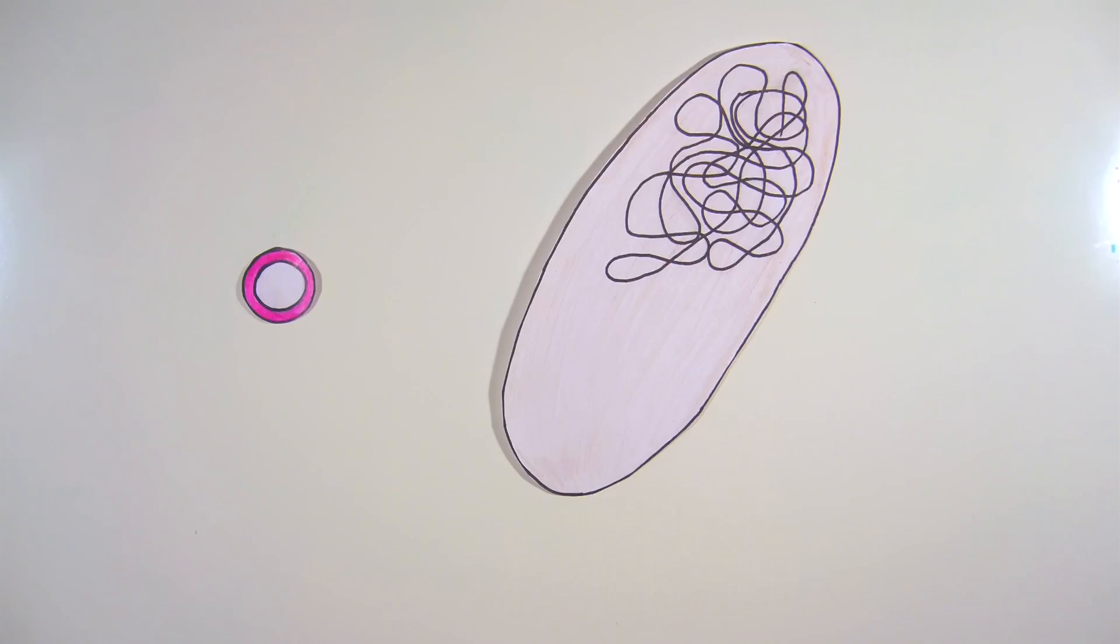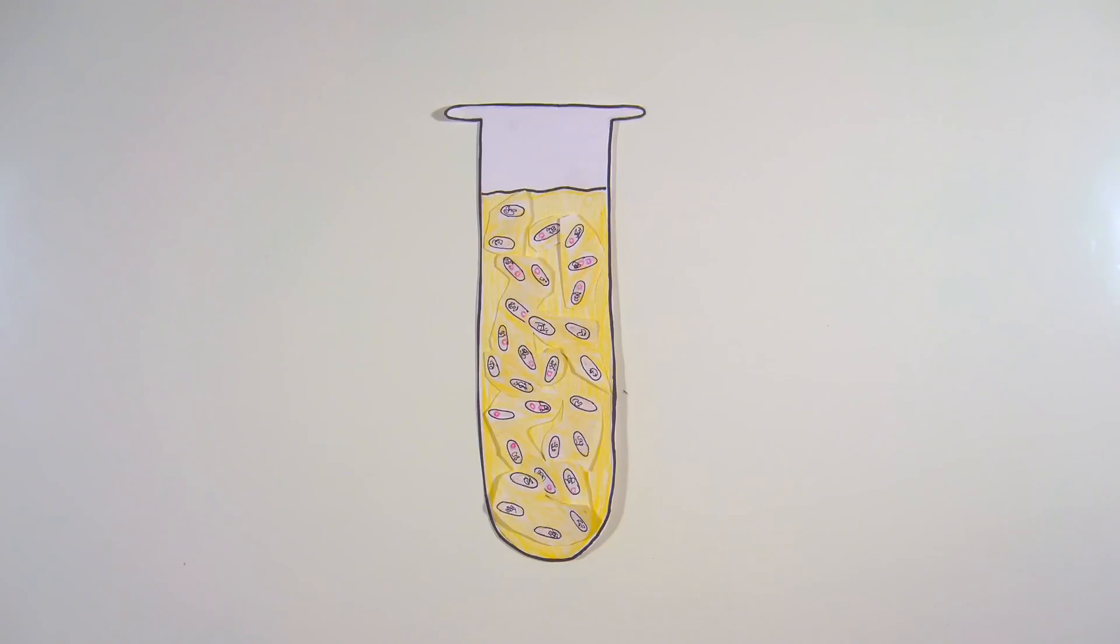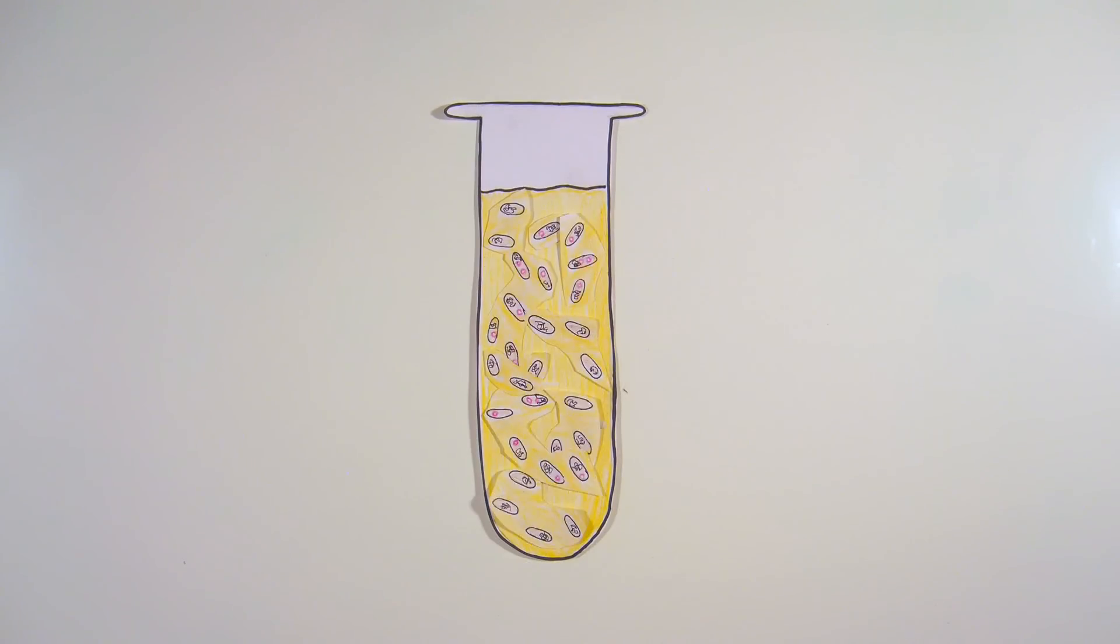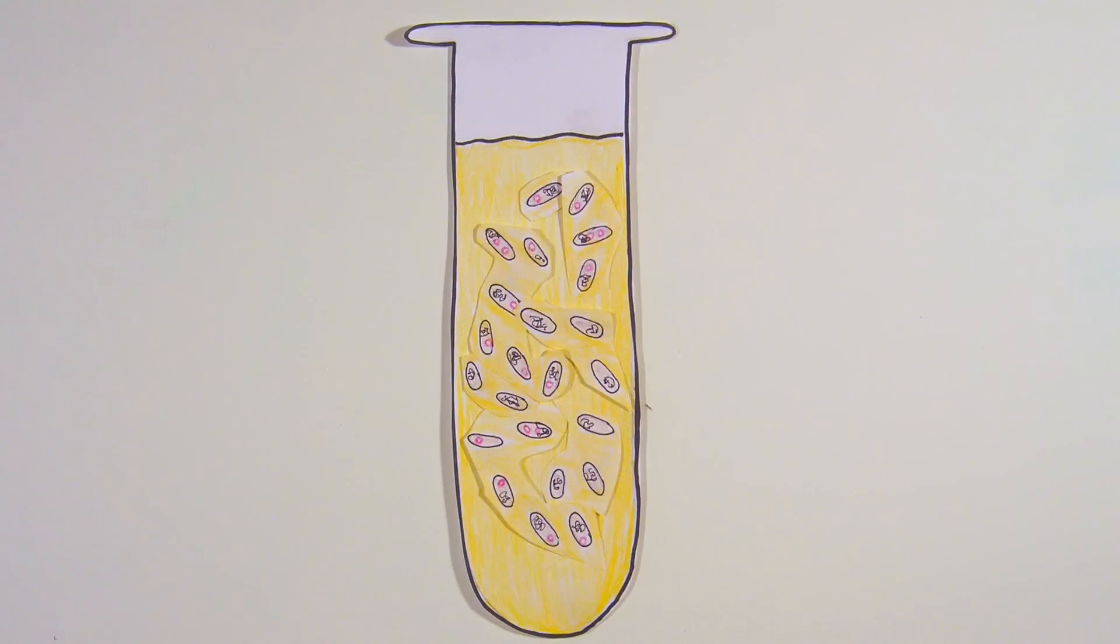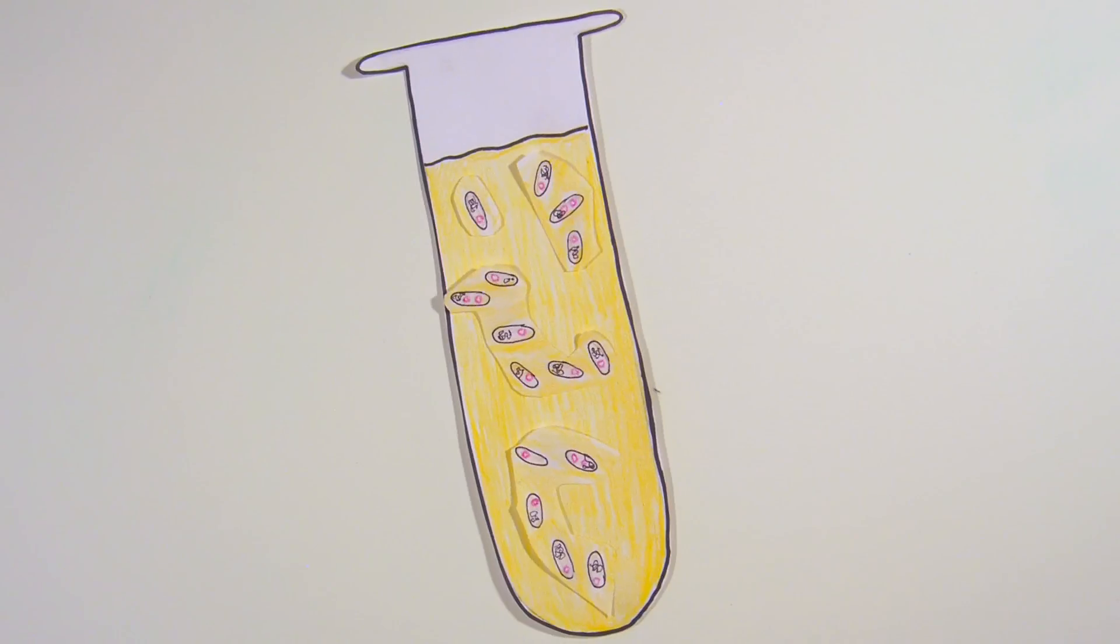Plasmids are introduced into bacteria through a process called transformation. Although bacterial transformation is far from 100% efficient, antibiotic selection for cells carrying the plasmid of interest is very efficient.